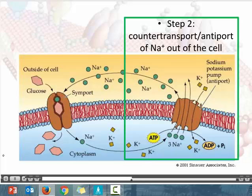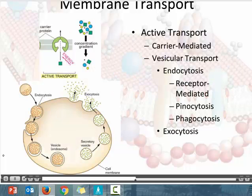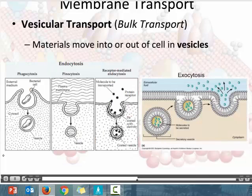We've talked about passive transport with diffusion and active transport using carrier proteins. Now we need to talk about active transport using vesicles — this is called vesicular transport. Vesicular transport uses vesicles to move material into the cell or out of the cell. We've got two options: into the cell or out of the cell. Let's talk about moving materials into the cell.